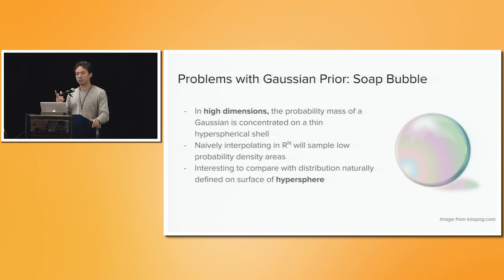Specifically, if you take two points on this shell and you try to interpolate through some sort of straight line, you're almost guaranteed to go into very low probability density areas where you get pretty poor samples. So one of our ideas was, it seems obvious that you want to try and see how that is solved if you use a distribution that is actually naturally defined on a hypersphere.